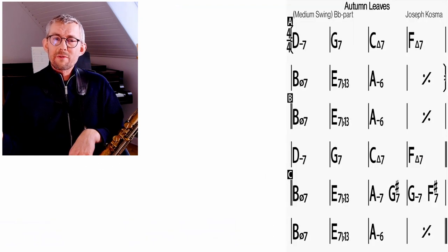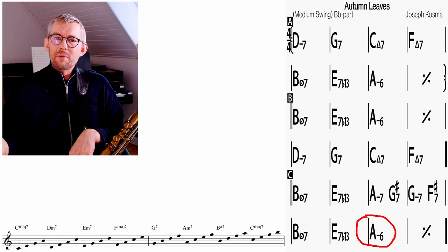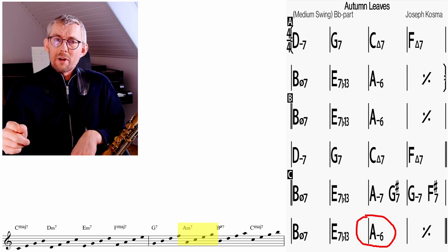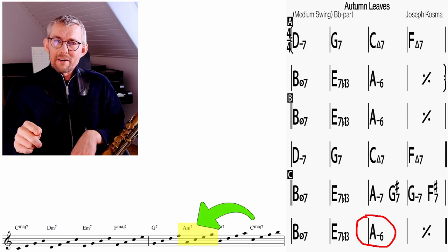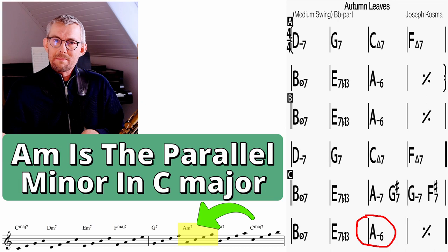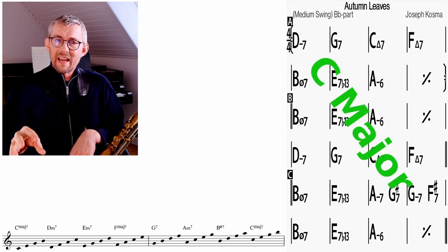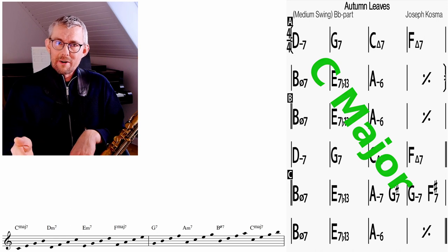Looking at Autumn Leaves you see we are finishing on an A minor chord, and we do find an A minor chord in the C major scale. Now the tricky part is sometimes you have to look for an A minor chord. Look for the parallel minor. A minor is the parallel minor to C major. When you're looking at the chords of Autumn Leaves you see that most of the chords also fit in the scale of C major. So A minor.